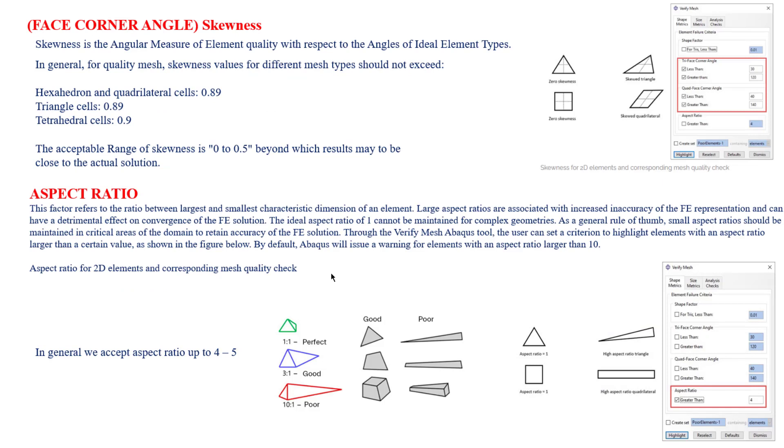A brief explanation about skewness: this is the angular measure of an element with respect to the angles of an ideal element. You can see these images - the zero skewness when it moves to these angles. 30 degrees minimum for tria faces, 120 degrees, 40 and 140 degrees for quad elements. These all come under skewness. The acceptable range is 0 to 0.5. We can consider up to about 0.9. If it is 1, that is not acceptable.